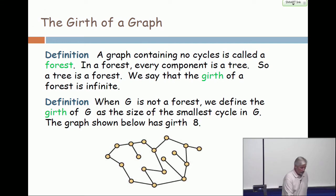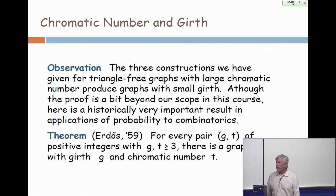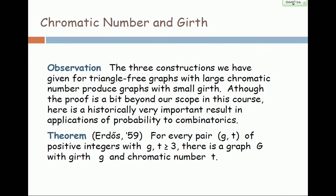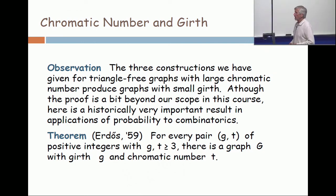Now, the constructions that we illustrated all have short cycles. But this famous guy that I've referenced several times, Paul Erdős many years ago, proved that you don't need them. So I just want you to look at the statement of this theorem. For every pair of positive integers G and T, with each of the integers at least three, there is a graph whose girth is exactly G and whose chromatic number is exactly T. Exactly.